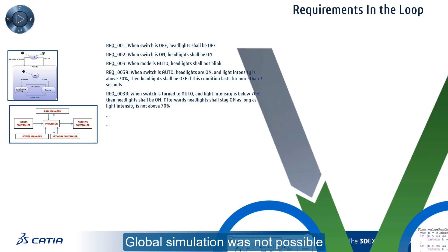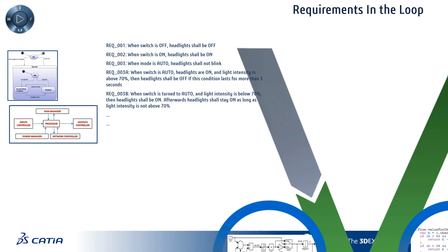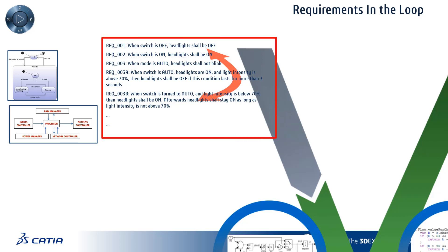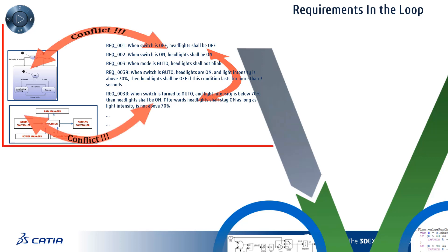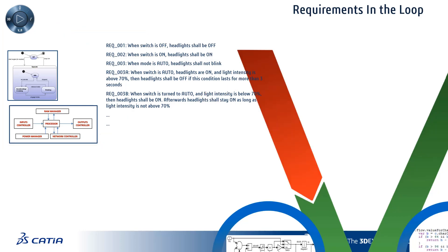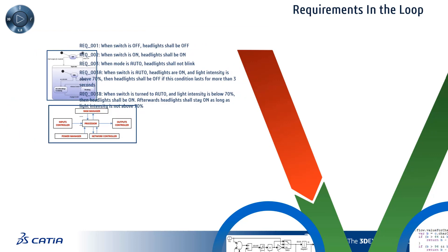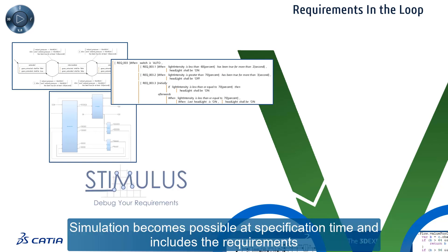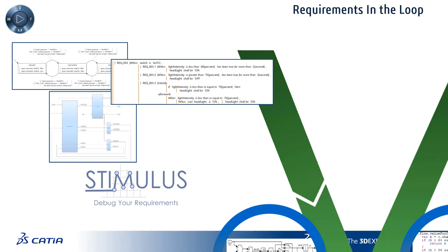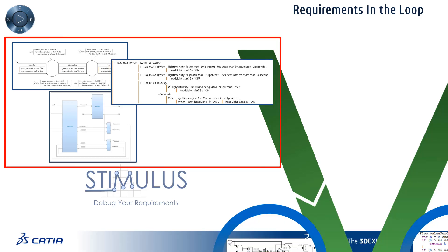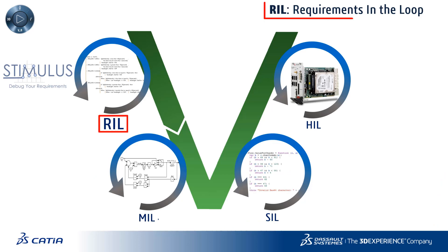As a consequence, the global system could not be simulated, and no tool was able to find the errors and inconsistencies within the requirements, or between the requirements and the models. ArgoSim's Stimulus tool reconciles the world of the model and the world of textual requirements, providing an earlier step for the use of simulation. Textual requirements are part of the specification, and the whole can be simulated — they are in the loop.